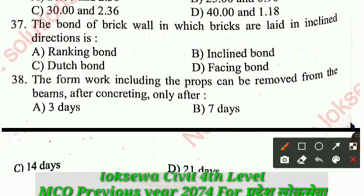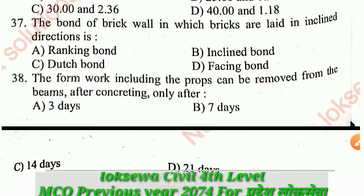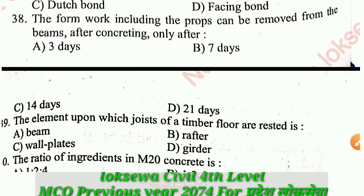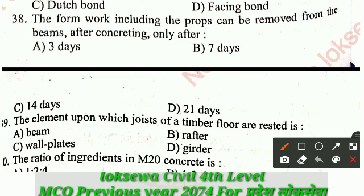Remember: coarse aggregate 20 mm and fine aggregate 2.36 mm. Question number 37: The bond of a brick wall in which bricks are laid in an inclined direction is called raking bond. The correct answer for Q37 is A: raking bond.